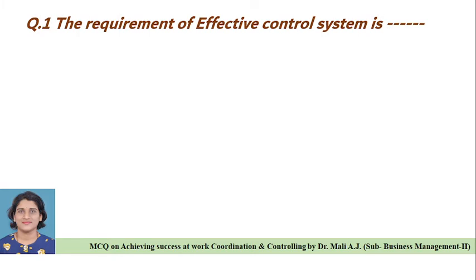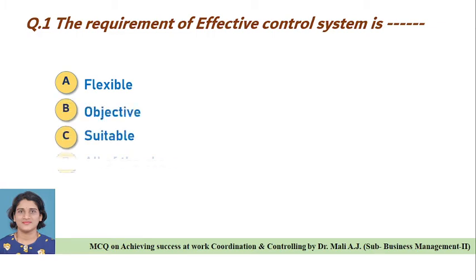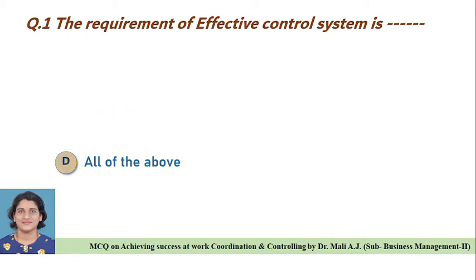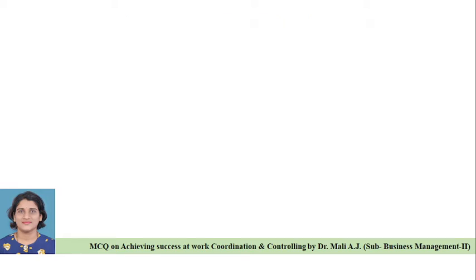Question one: The requirement of effective control system is — Option A: Flexible, Option B: Objective, Option C: Suitable, Option D: All of the above. Correct answer is Option D, All of the above. The requirement of effective control system is all of the above.